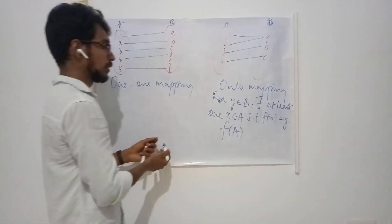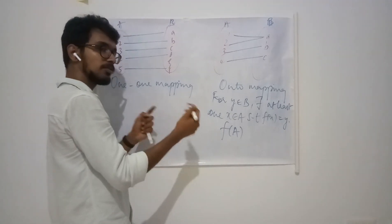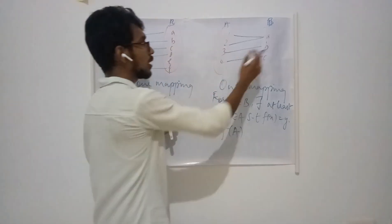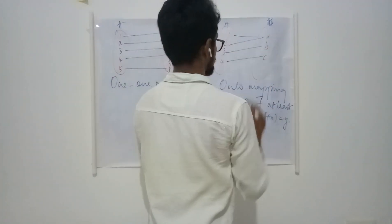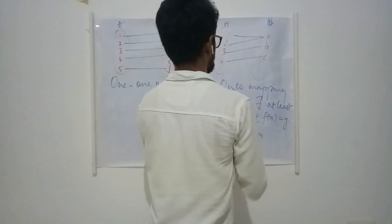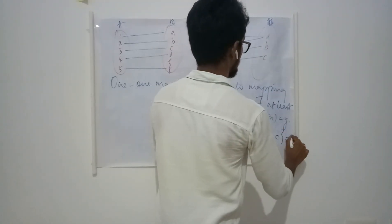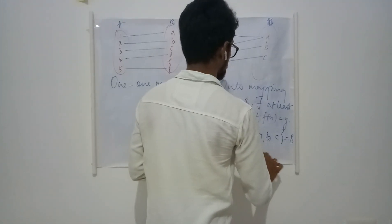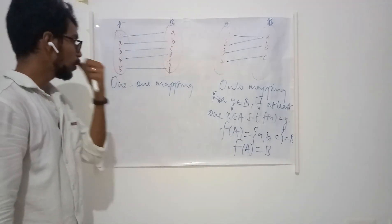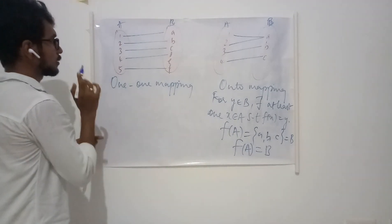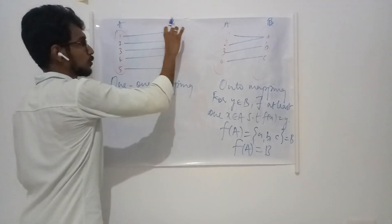In the previous example, the image set was a proper subset of B. In the onto mapping, if you collect the images: 1 maps to A, 2 also maps to A, 3 maps to B, and 4 maps to C — this is your entire codomain. So if your image set is the same as your codomain, then your mapping is onto. Here, two different elements map to two different elements.